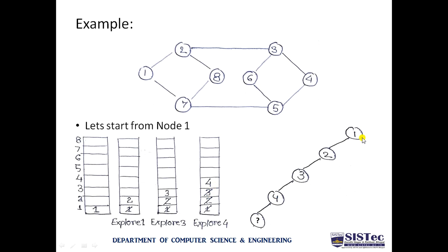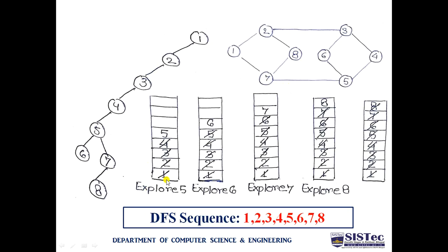Each time we explore, we continue building the spanning tree. Exploring node 4, we have two options: 3 or 5. Node 3 is already visited, so we go toward 5. Node 5 is stored at the top of the stack. Exploring node 5, we get node 6. From 6, we cannot choose 3 or 5 because they are already visited. So we must perform backtracking.